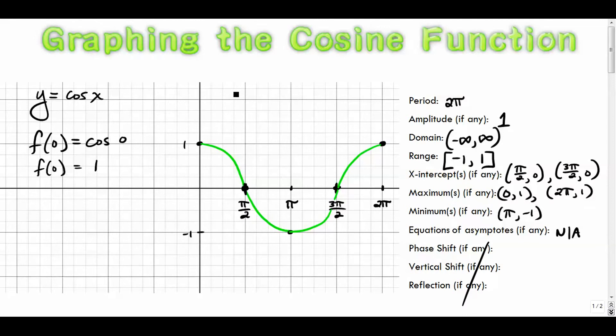We're going to change the amplitude, right? If we do two cosine of x, the amplitude is going to be two. We can sometimes reflect the graph, which would make a negative a value. Sometimes we'll even change the b term, which is kind of the number in front of the angle. And that'll change the period.